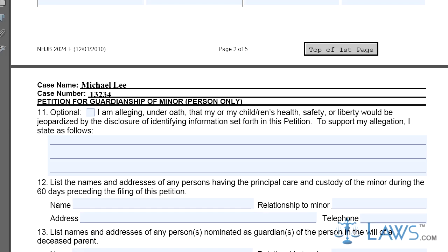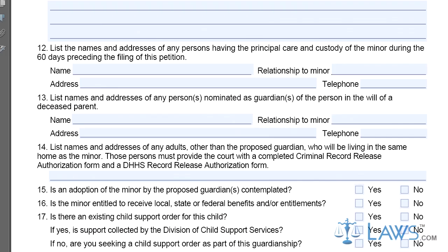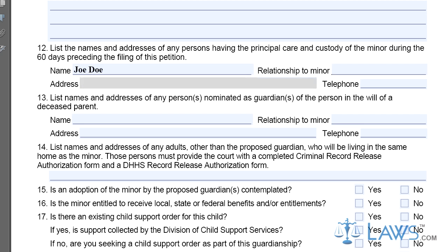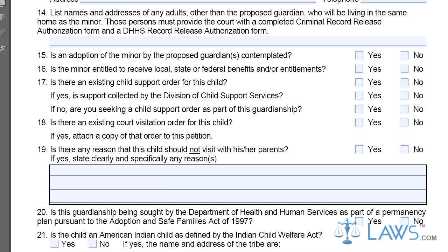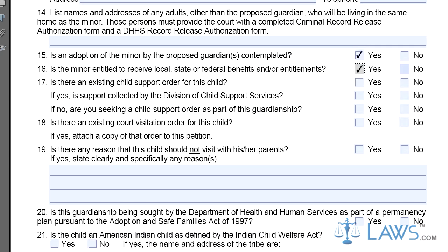Step 6. Parts 12 and 13 require the petitioner to provide information about a person with custody of the minor for at least 60 days before the hearing, as well as any nominated guardians listed within the will of a deceased parent.